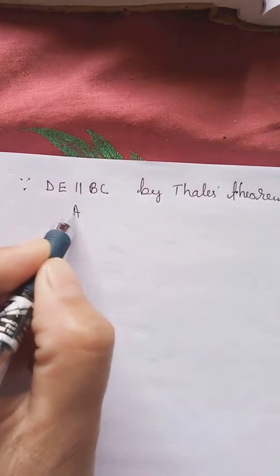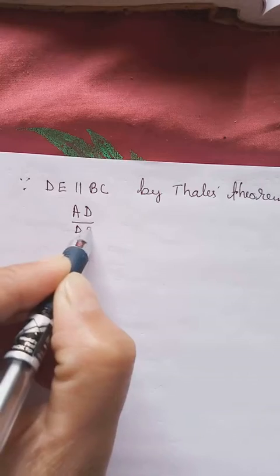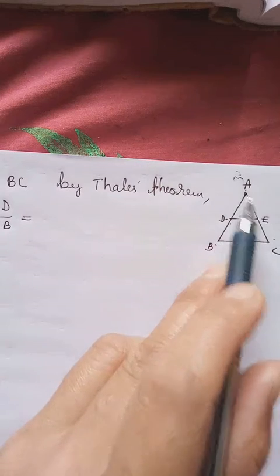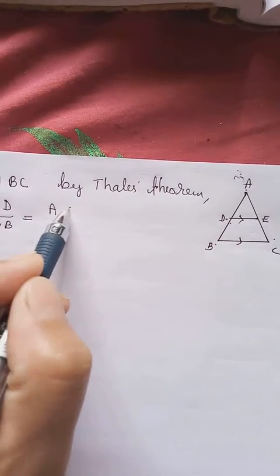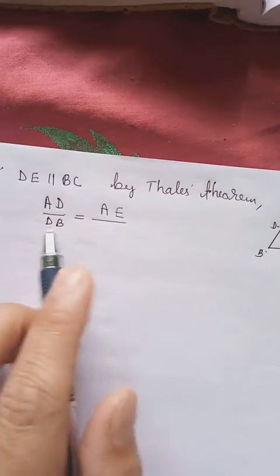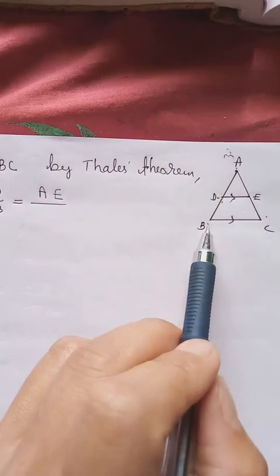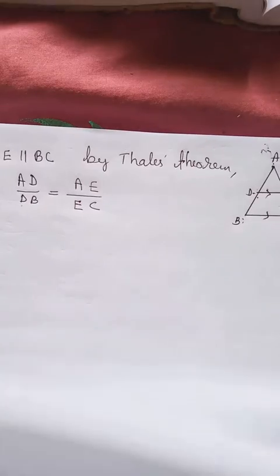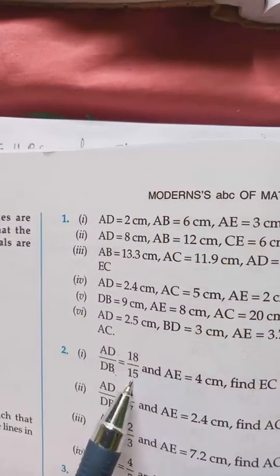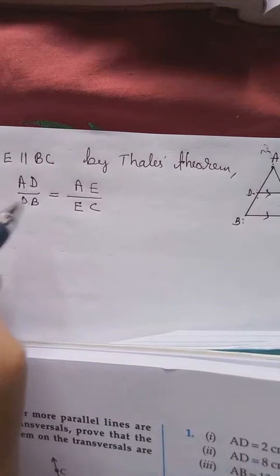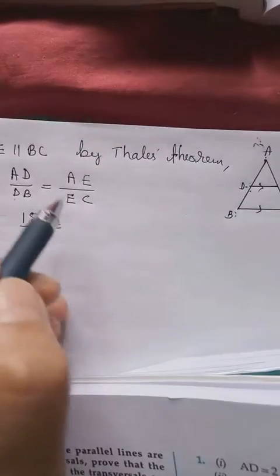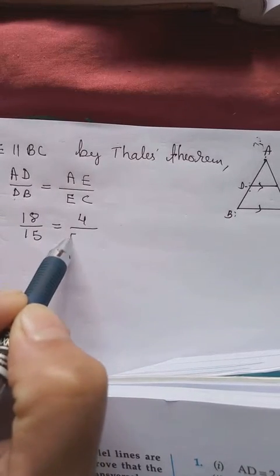So we have AD by DB. Let's take the other part. Here we have AD, corresponding to this we have AE. This side we take DB, so corresponding to DB we have EC. What we know we replace, what we don't know we find out. AD by DB, we already have 18 by 15. So in place of this two we can write 18 by 15 equal to AE. AE here we have 4, and then EC we still have to find.